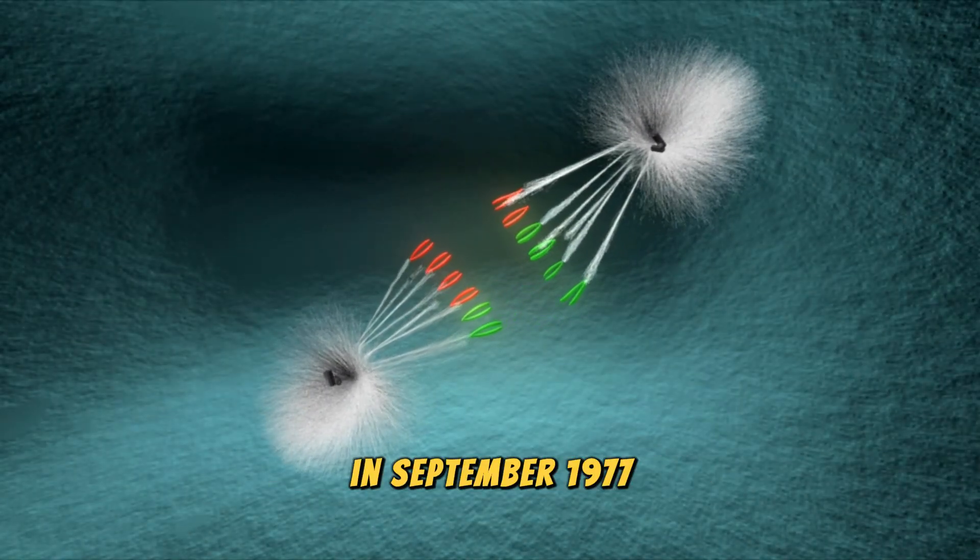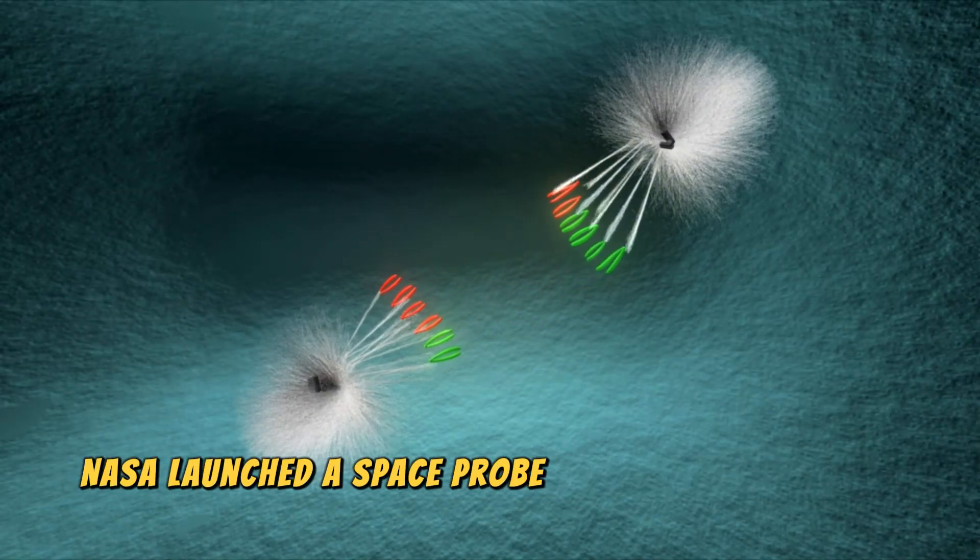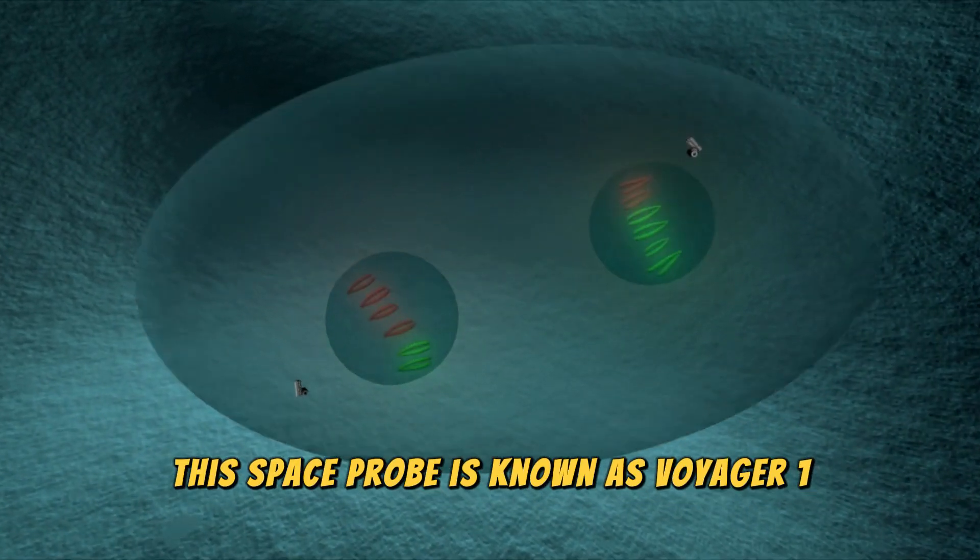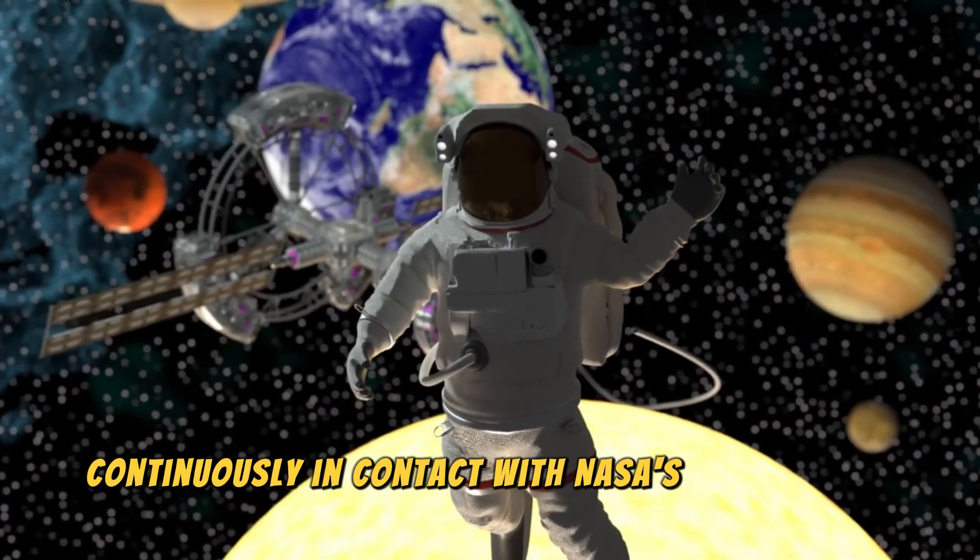In fact, about 44 years ago, in September 1977, NASA launched a space probe to interstellar space. This space probe is known as Voyager 1, and for the past 44 years, it has been continuously in contact with NASA's base station.